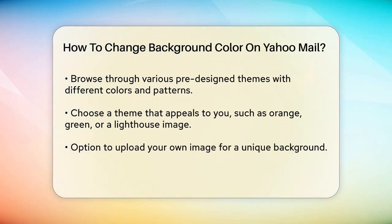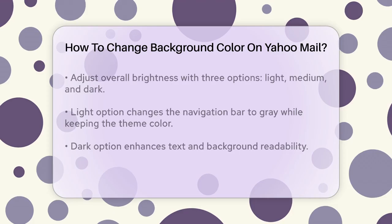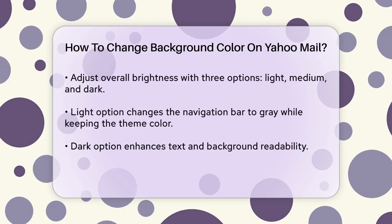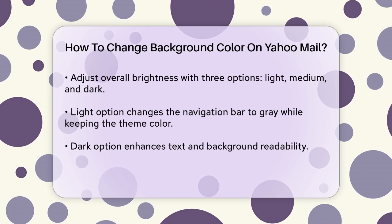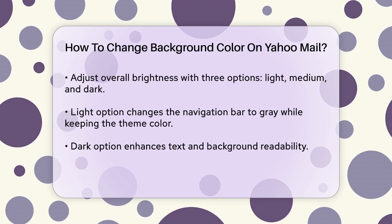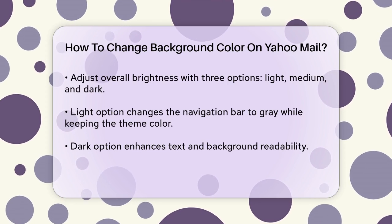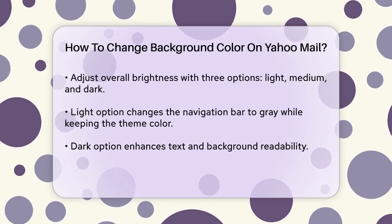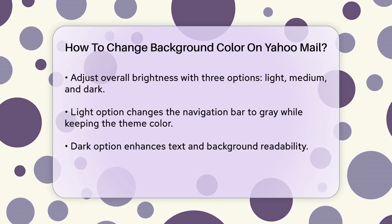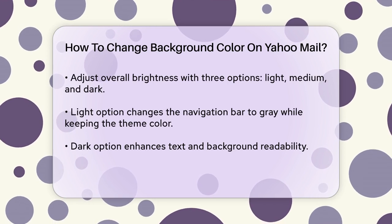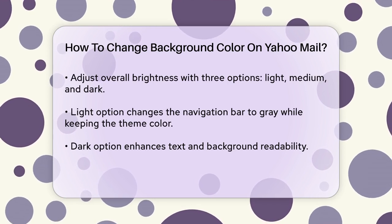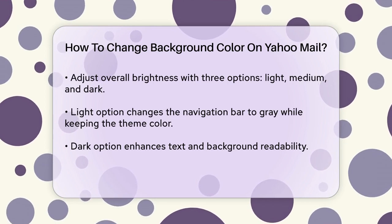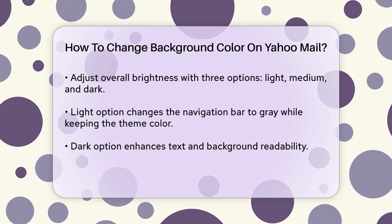In addition to choosing a theme, you can also adjust the overall brightness of your inbox. You have three options: light, medium, and dark. If you prefer a lighter look, select light, which will change the navigation bar to a gray color while keeping the top bar in the theme's color.